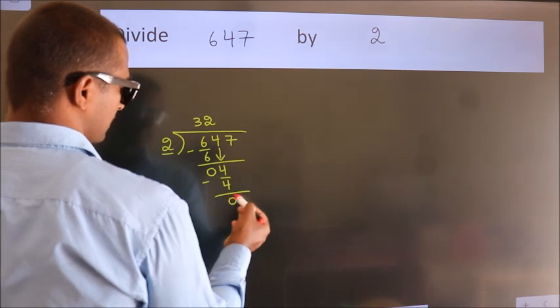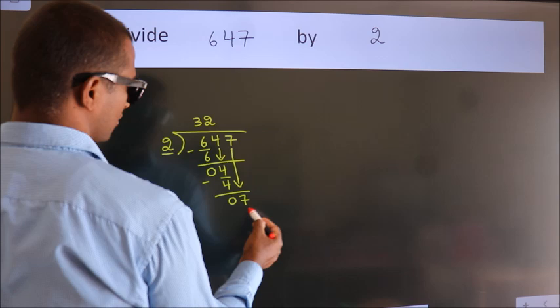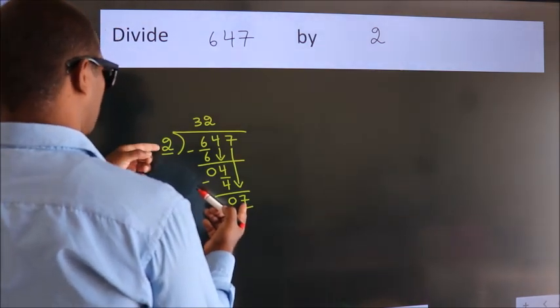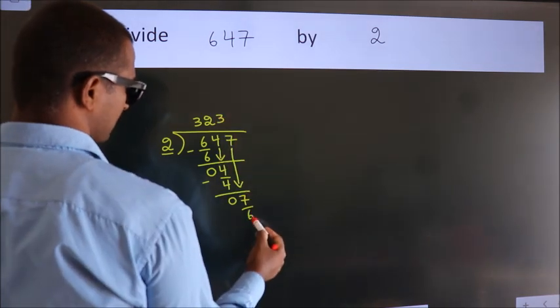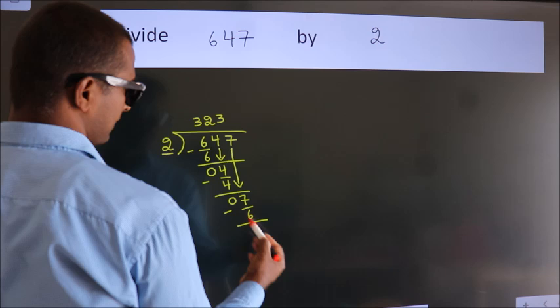After this, bring down the beside number, so 7 down, so 7. A number close to 7 in 2 table is 2 threes, 6. Now, we subtract, we get 1.